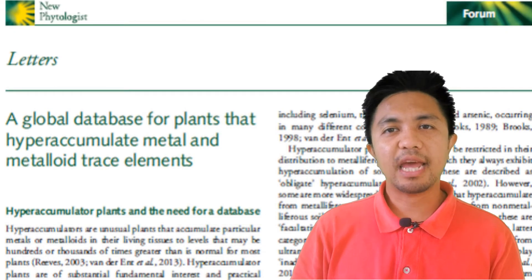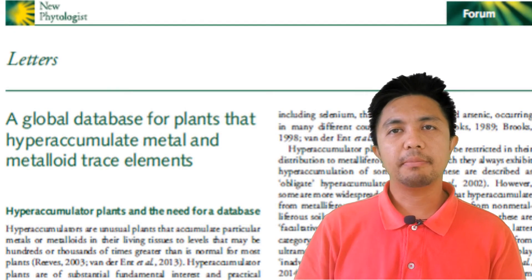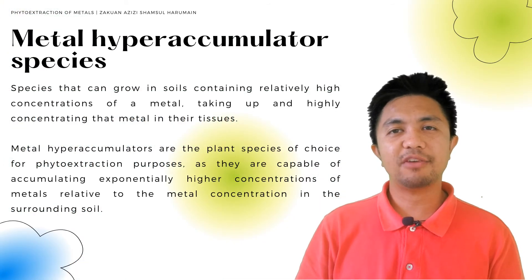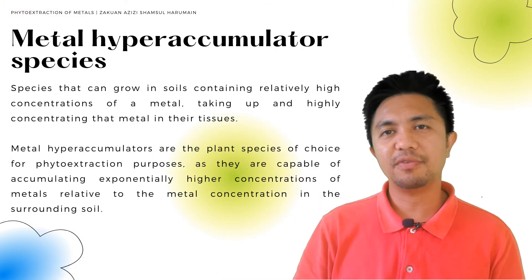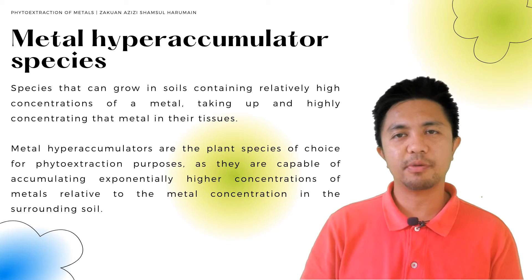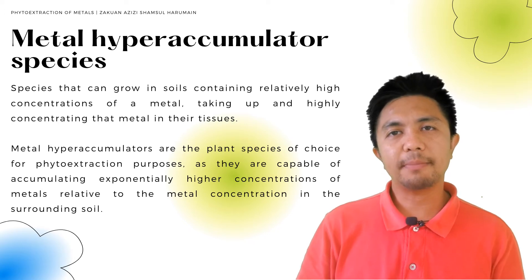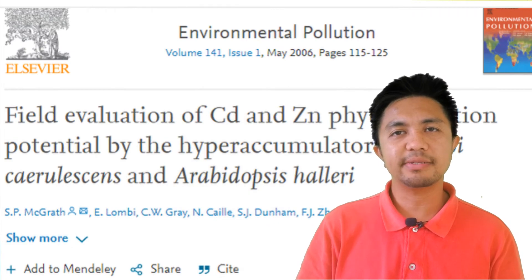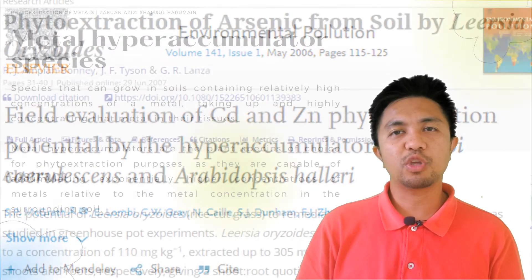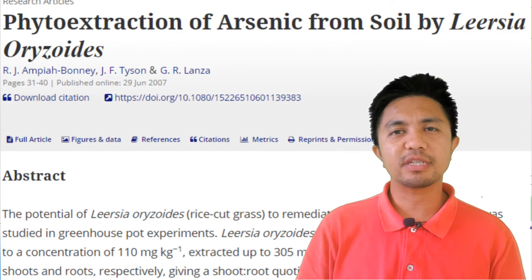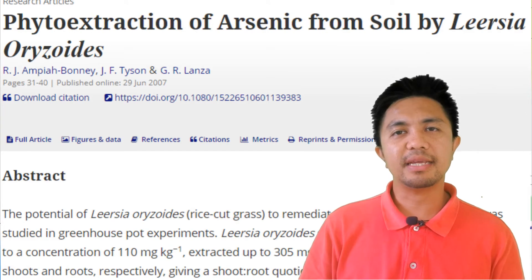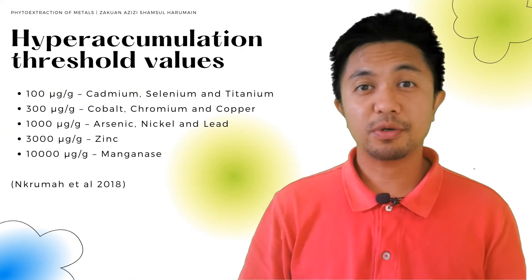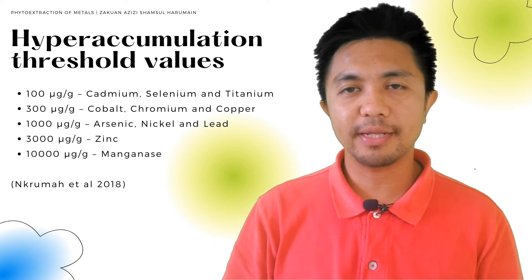At least around 700 hyper accumulator plant species have been described so far, belonging to a wide range of families, and many of these have been extensively studied for phytoextraction purposes. Known examples include Arabidopsis halleri and Thlaspi caerulescens, which are able to accumulate high levels of arsenic, lead, zinc as well as non-essential metals such as cadmium.